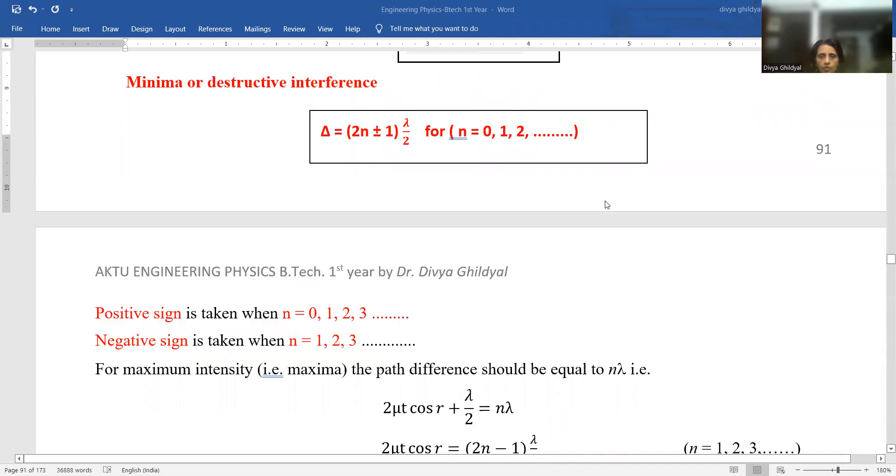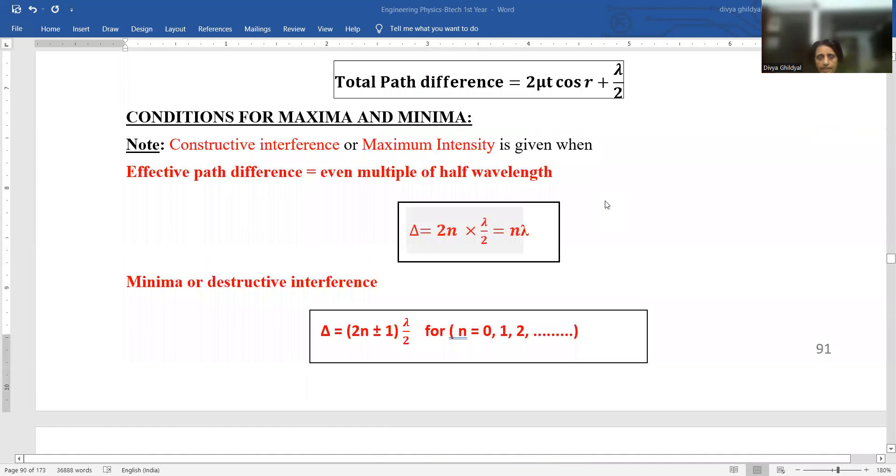I told you about the path difference between two rays when they are formed a uniform thickness thin film, 2 mu t cos r plus lambda by 2.